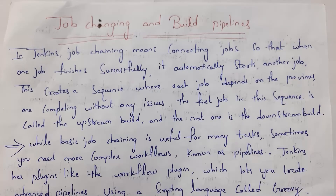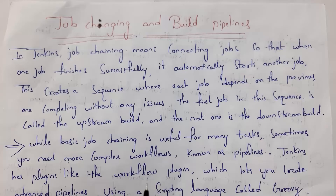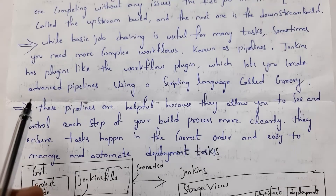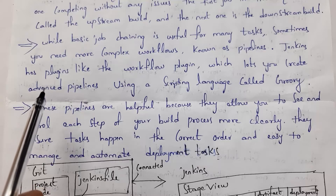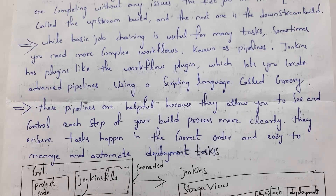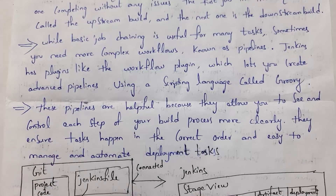By using job chaining, we can complete multiple tasks. And there is also complex job chaining — we call this complex job chaining as pipelines. In Jenkins server, there is one plugin called workflow. By using this workflow plugin, we can create advanced pipelines. We can create these pipelines using a scripting language called Groovy. By using these pipelines, we can see each and every step clearly, and by seeing each step clearly, we can clearly understand how work is going on.